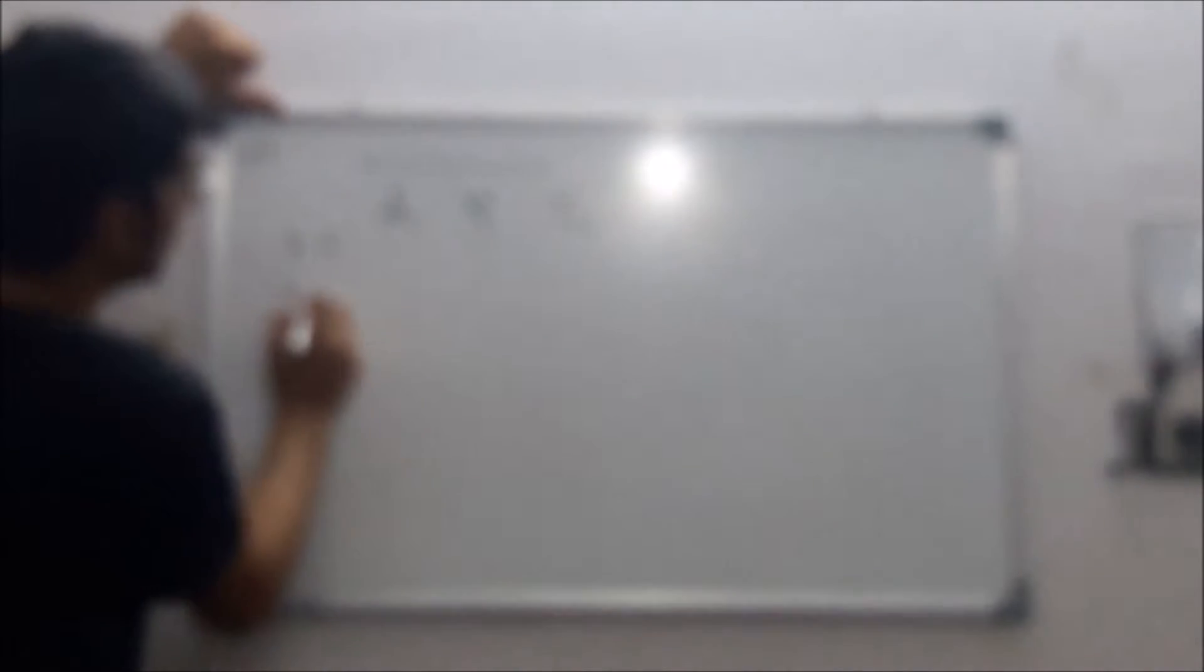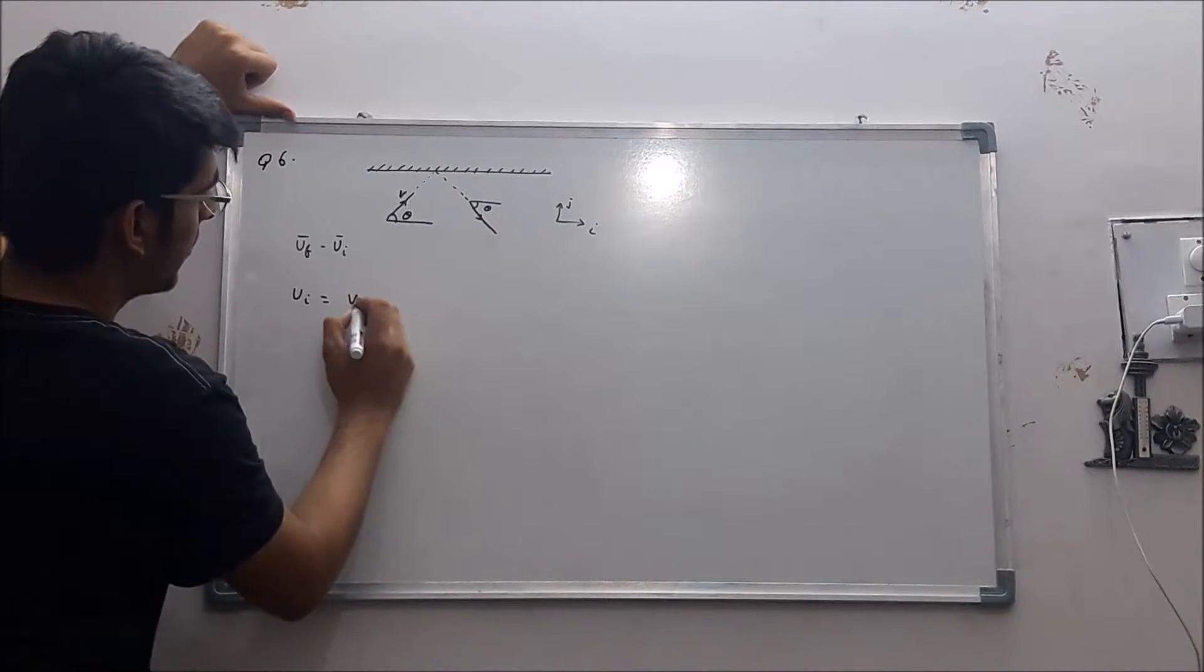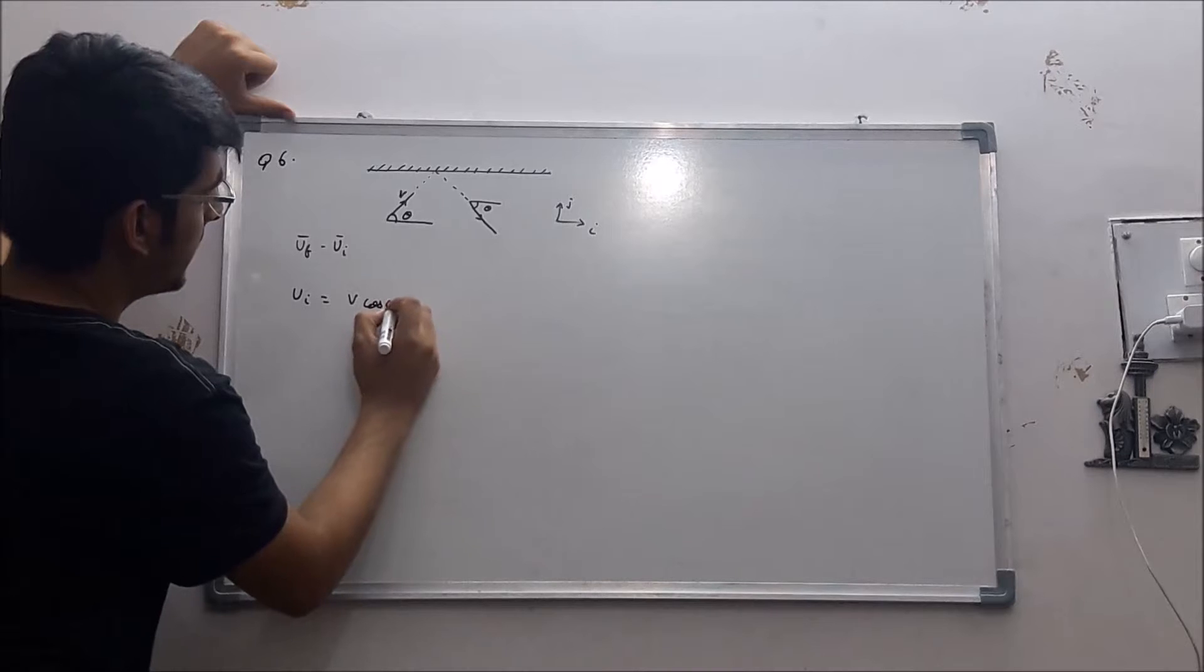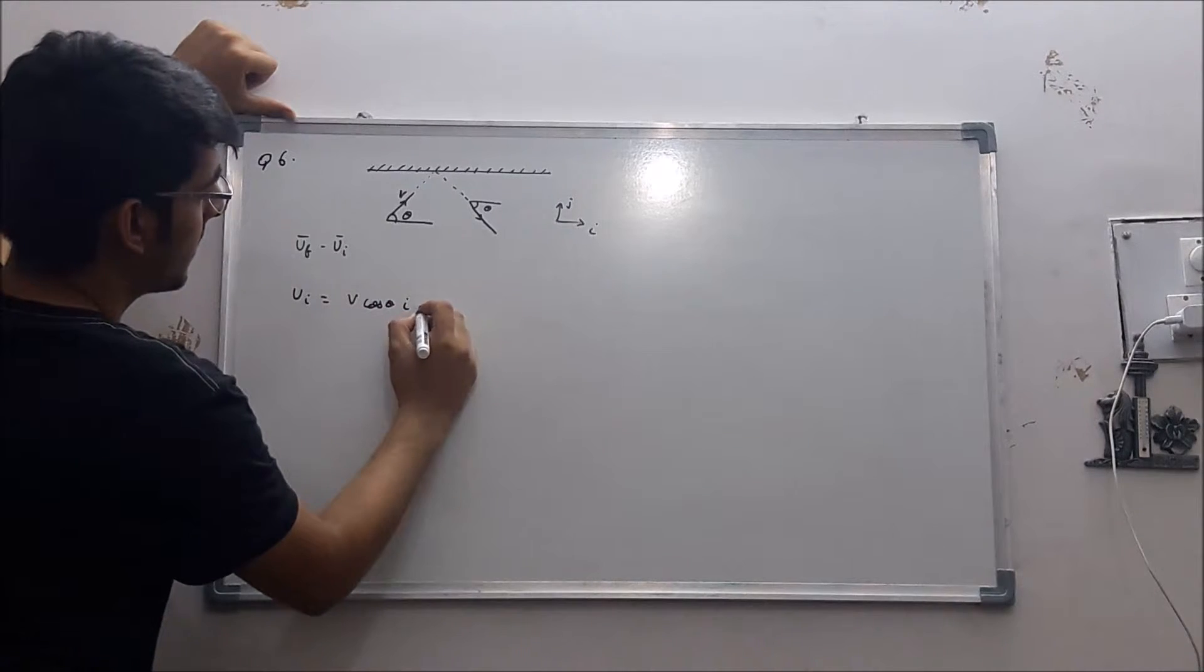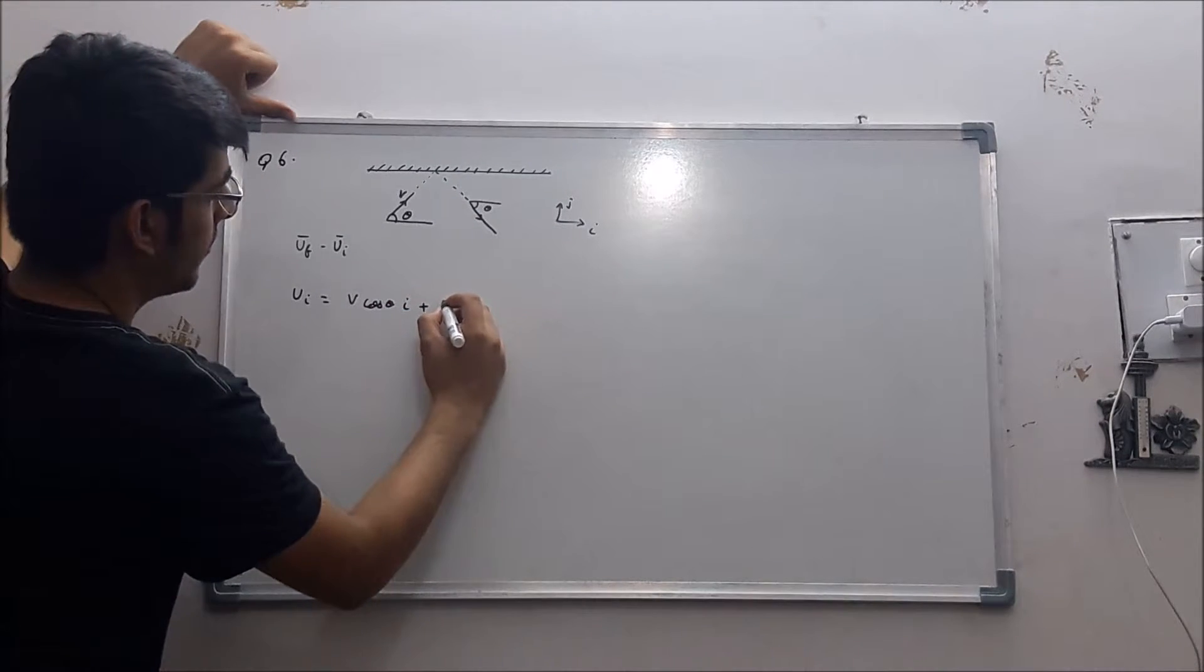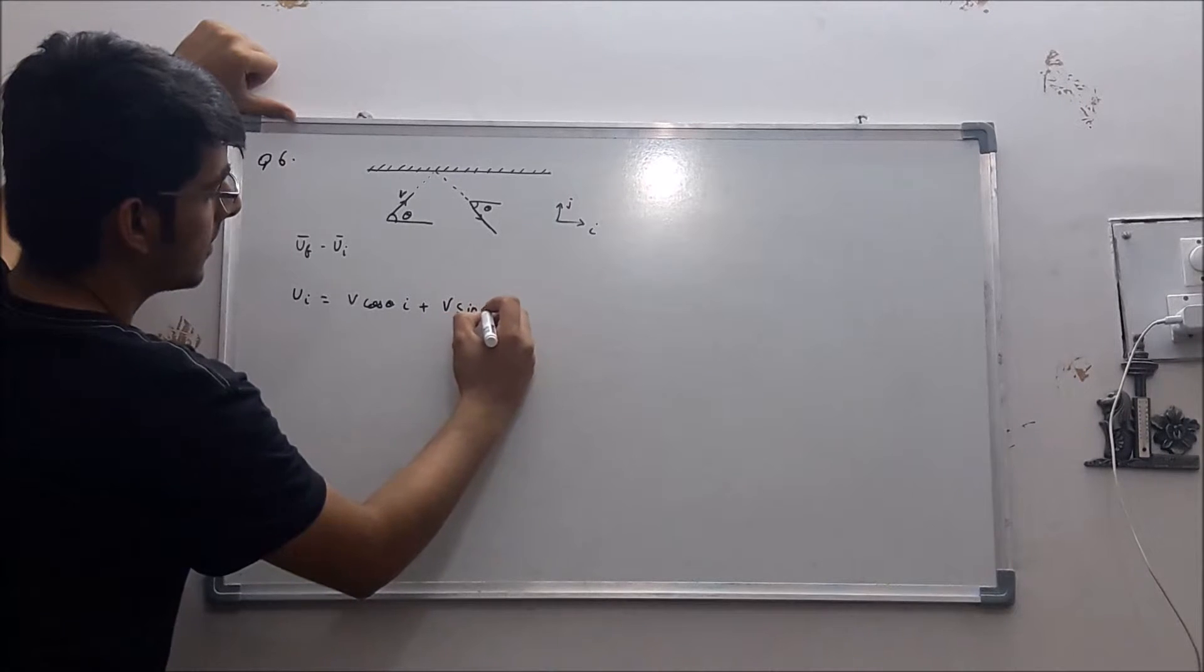So initial velocity will be v cos theta i plus v sin theta j.